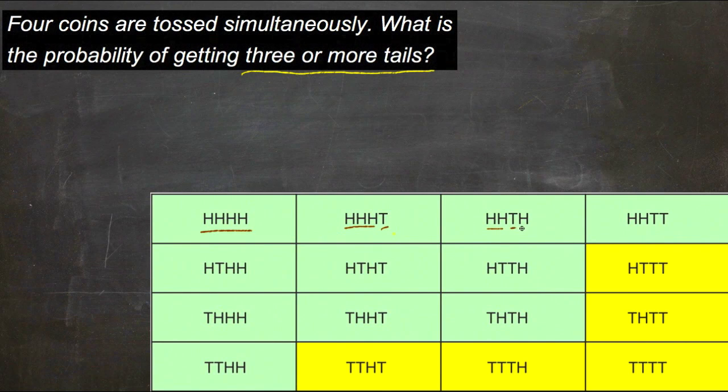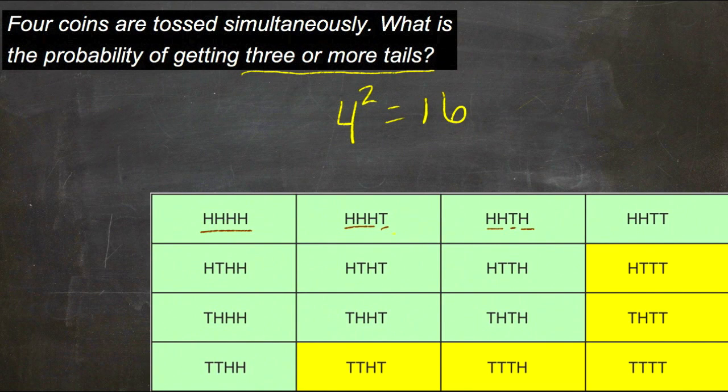Here's all the possible different combinations. It really ends up being four to the power of two, which is a total of 16 possibilities. Now out of that 16 possibilities, we have five of them that include at least three tails. So we have five possibilities out of 16, or five-sixteenths, as our chance of getting three or more tails.